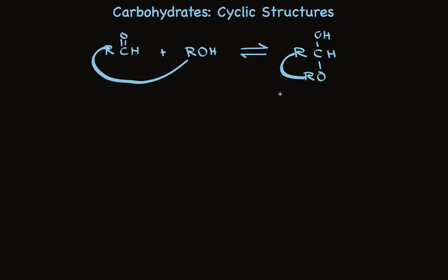While we can imagine a variety of ring sizes being formed, five-membered and six-membered rings are preferentially formed. And of these two, generally the six-membered ring is formed.